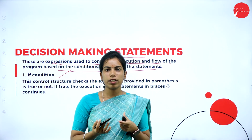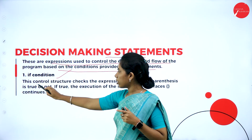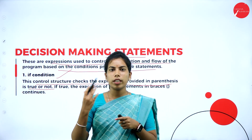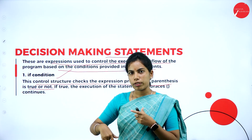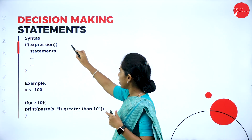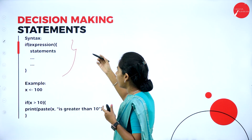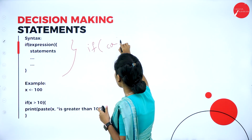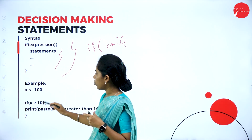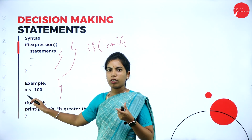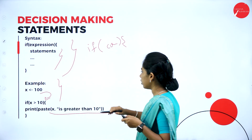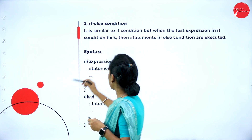The first decision making statement is the if condition. This control structure checks whether the expression provided in parentheses is true or not. If the condition is true, it will be executed; if false, it will come out of the loop. The basic syntax is: if (expression) { statement to execute }. For example, if x is assigned 102 and we check x > 10, it will be printed since the condition is true.